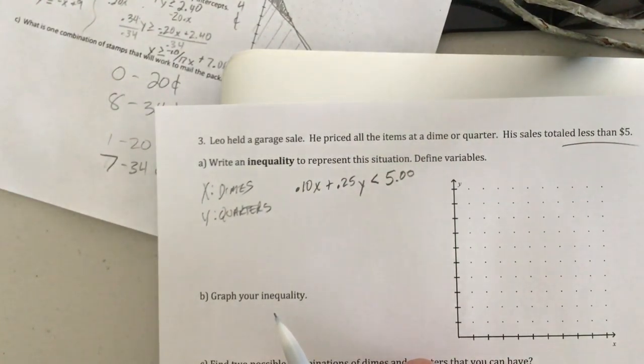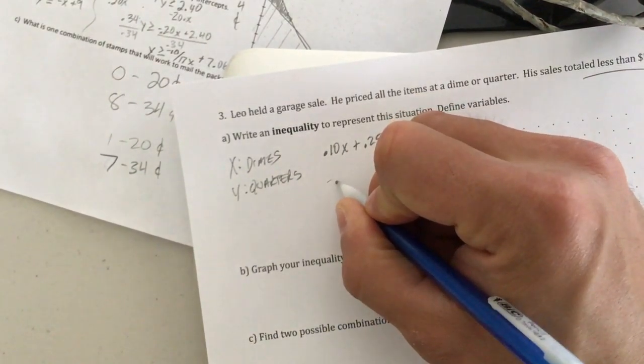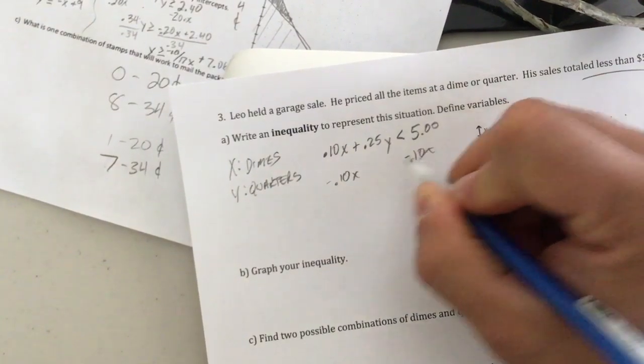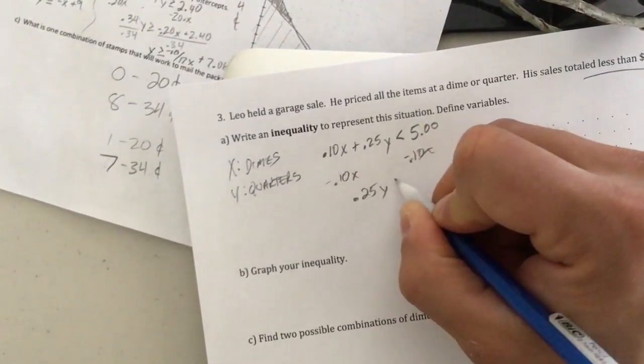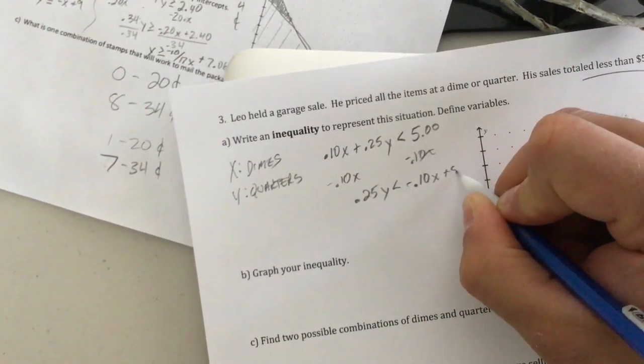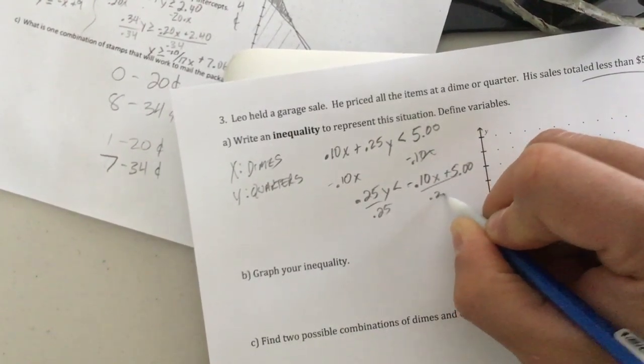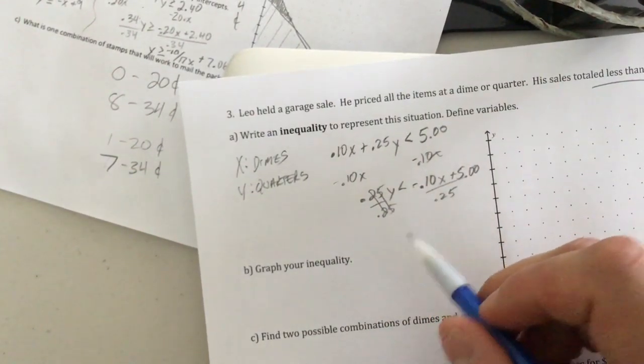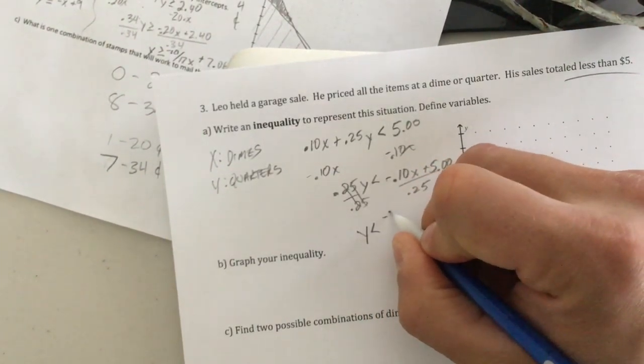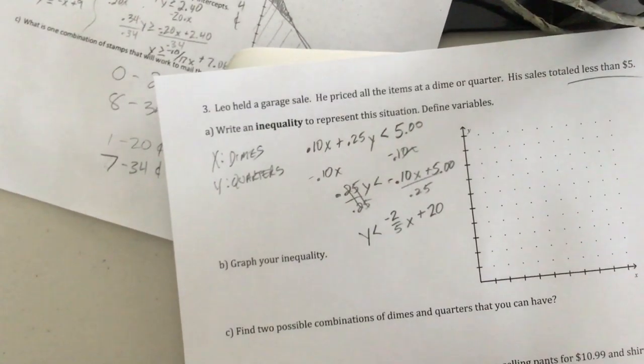Notice it does ask to graph our inequality. You can do this however you want. Personally, I'm going to solve for Y. Everybody's different. So I'm talking about Y is less than negative 0.10X plus $5. We divide both sides by 0.25. Now, you might need your cell phone calculator for that. No judging. We get Y is less than negative 2/5X plus 20.